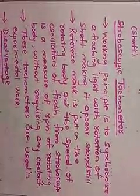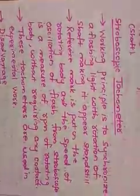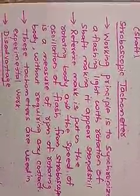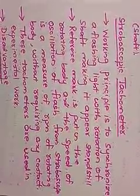This type of tachometer does not require any contact of the sensor with the object whose rotational speed is to be measured. Stroboscopic tachometers are used in experimental work. A disadvantage is that ambient light must be controlled — if the surrounding light intensity is not maintained, the measurement may not be effective. This is a key disadvantage of the stroboscopic tachometer.